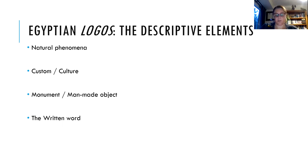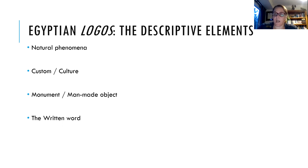For the written word category, there are a few papyri that Herodotus refers to, and five inscriptions noted on objects. Only one of those actually includes how it's placed on the monument; all the others are just noted, but all are given a translation.